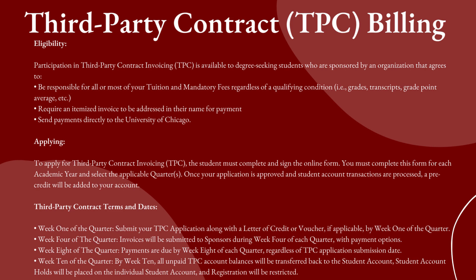To apply for third-party contract invoicing, the student must complete and sign the online form. You must complete this form for each academic year and select the applicable quarters. Once your application is approved, a pre-credit will be added to your account and student account projections will be processed. You will submit your TPC application along with a letter of credit or voucher, if applicable, by week one of the quarter. By week four, your invoice with payment options will be submitted to sponsors. By week eight, payments are due regardless of TPC application submission dates. By week ten, all unpaid TPC account balances will be transferred back to the student account, student account holds will be placed on the individual student account, and registration will be restricted.